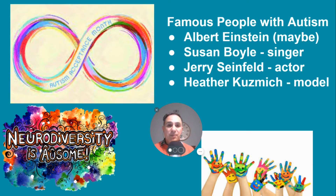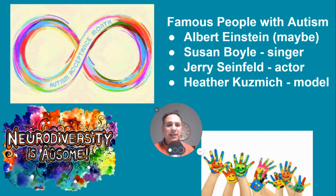Albert Einstein — never officially said, but from what we can tell, he probably was what we say on the spectrum. Susan Boyle — she was on Britain's Got Talent, she's a singer. Jerry Seinfeld, a very famous actor. And Heather Kuzmich, who is a model. Look at all these people — they're doing amazing things. So just because someone is autistic doesn't mean they can't do anything.